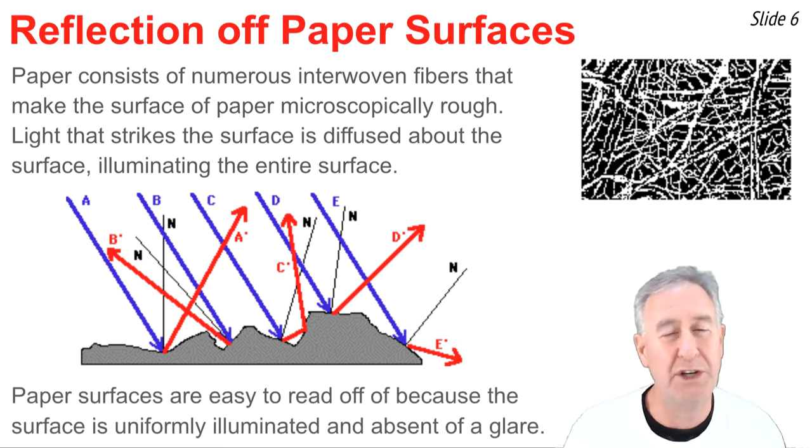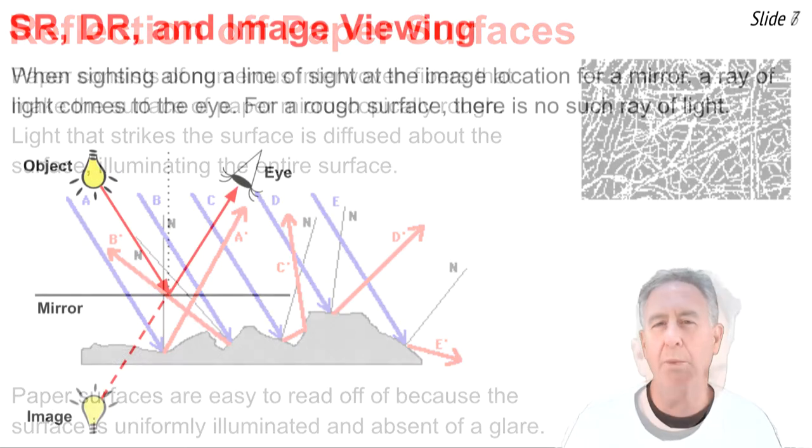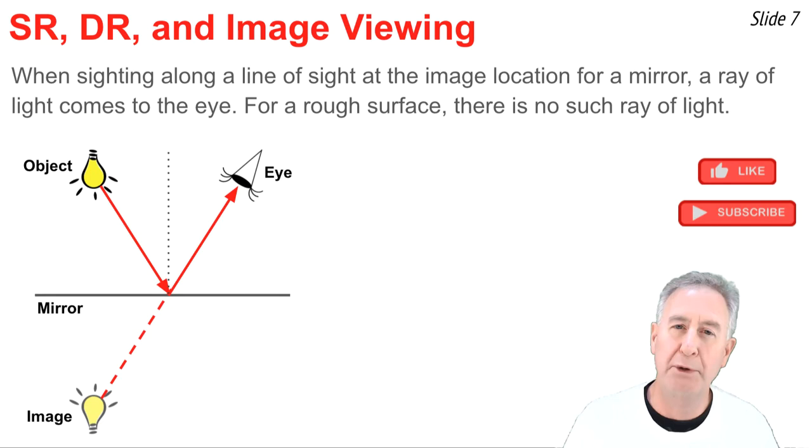Because of this, paper surfaces are easy to read off of. You don't see a glare from the light bulb that shines on it, and the paper is uniformly illuminated. While it's easy to read off of a paper surface, it's pretty difficult to look into a sheet of paper to comb your hair or put on your makeup. That's because a paper surface doesn't form an image of the objects that are placed upon it.